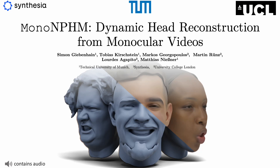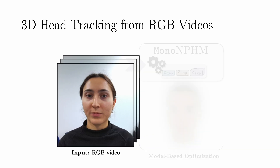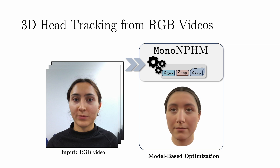We present MonoPHM: Dynamic Head Reconstruction from Monocular Videos. Given a commodity RGB video, we aim to achieve high-fidelity 3D head tracking using learned priors of a neural parametric head model.